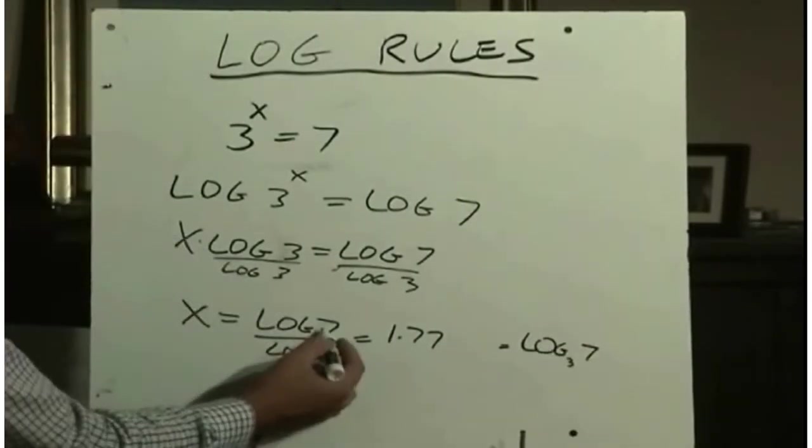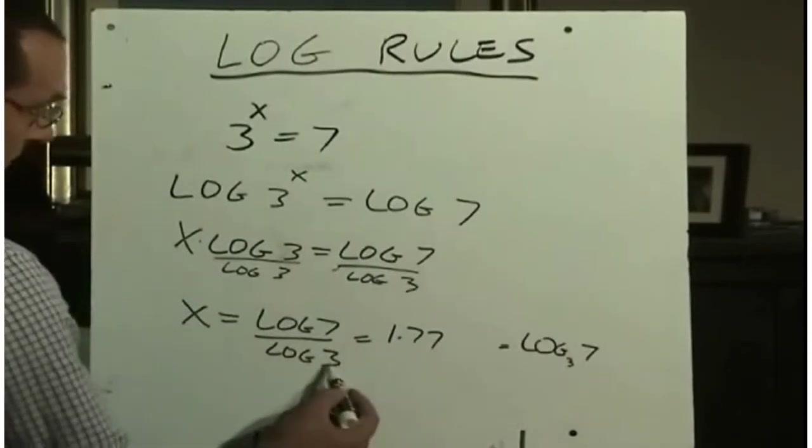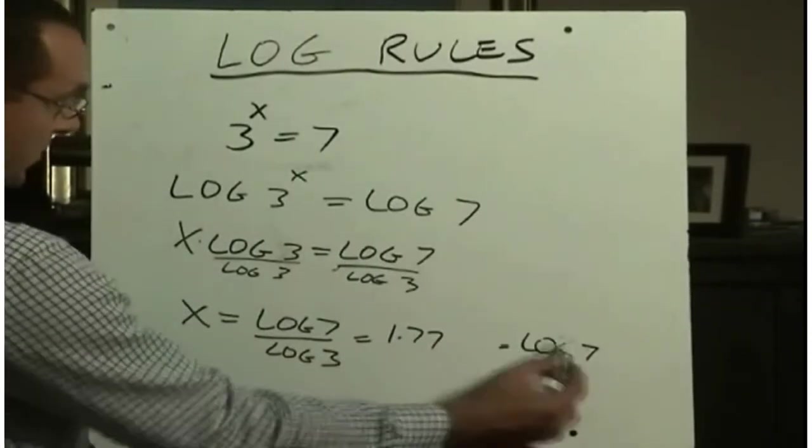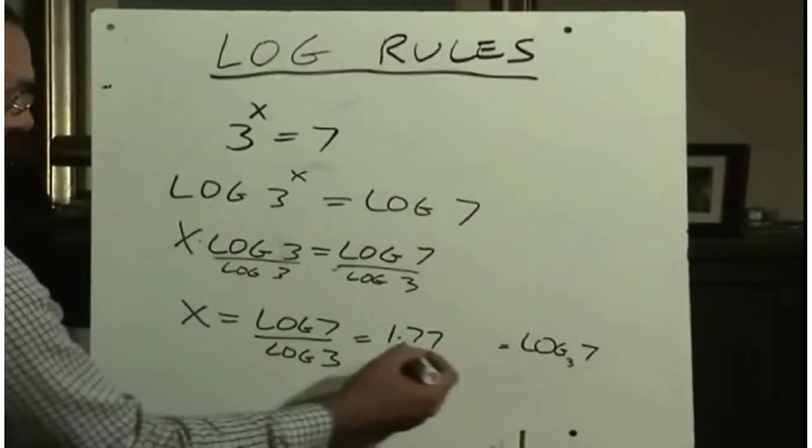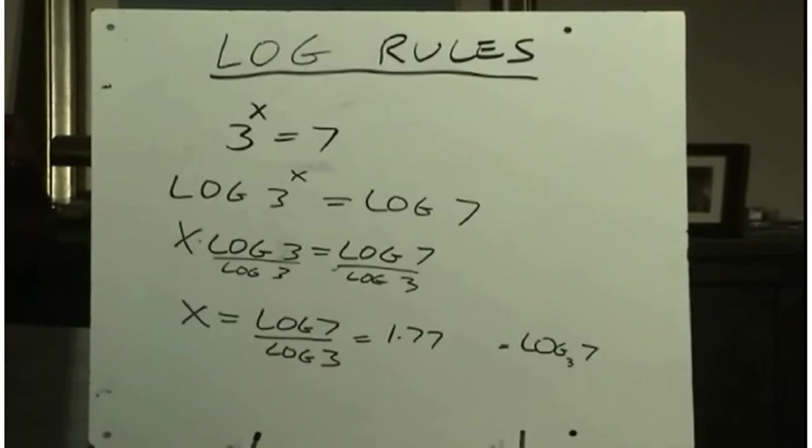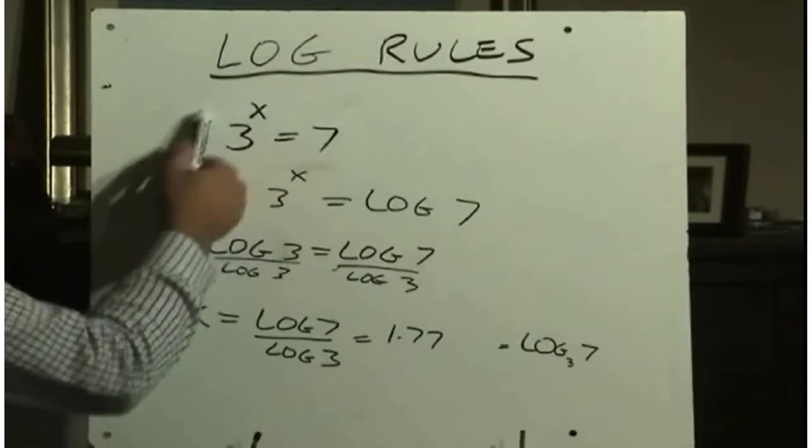Remember log A divided by log B, log base B of A. So this becomes the base, this becomes what I'm taking a log of. So log base 3 of 7 would be the solution, the exact answer, or as a decimal, 1.77. We're going to do a lot more of these equation solvings a little later on.